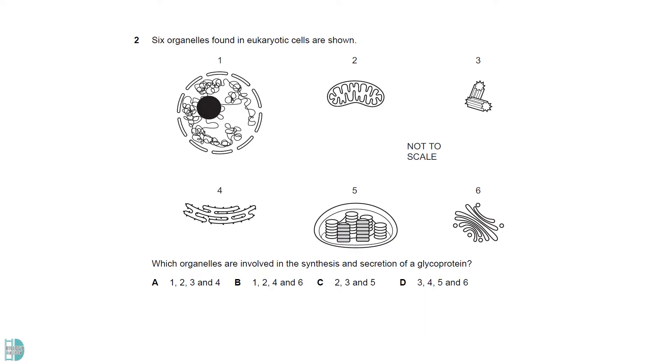Let's first identify the organelles. One is the nucleus, two is a mitochondrion, three is a pair of centrioles, four is the rough endoplasmic reticulum, five is the chloroplasts, and six is the Golgi apparatus.